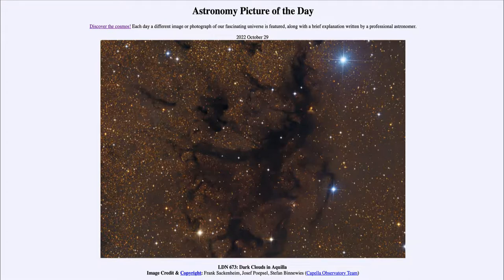So the Herbig-Haro object is not the star itself but is caused by the jets from the star that impact material left over from its formation around there.